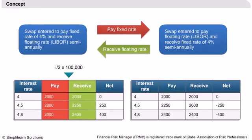Let us now understand what swaps are. Imagine that one person is holding a semi-annual bond that pays a 4% coupon on a principal of $100,000. This person receives a fixed payment of $2,000 every six months as coupon payments, as shown in the slide. Consider another person holding a bond that pays floating interest based on 6-month LIBOR. Suppose that the interest rates for the next three periods are 4%, 4.5%, and 4.8%. Then this person will receive $2,000, $2,250, and $2,400 every six months.